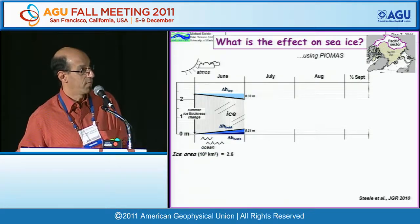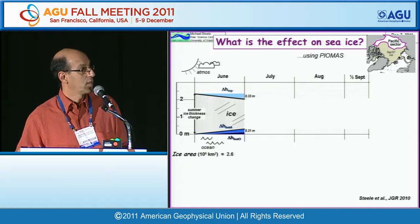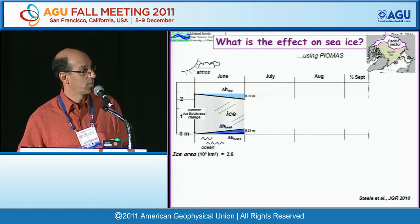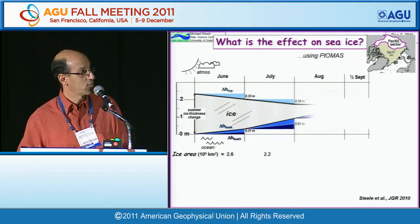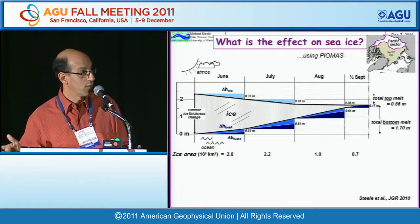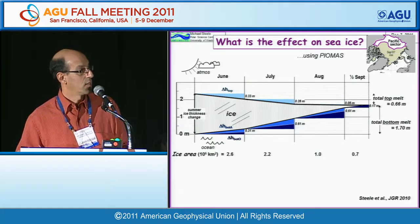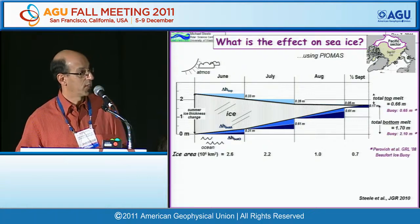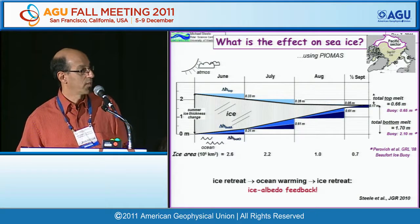The next question is: what is the effect of this warm water on sea ice? Using the model and averaging over the Pacific sector, net ice melt starts in June with about 30 centimeters of melt on top and similar on the bottom of the floe surfaces. As summer progresses and the sun sets, top melting goes to zero and bottom melting becomes more important, as the ocean has absorbed heat from the sun and is now transferring it to the ice. This is the classic ice-albedo feedback: ice retreat allows the ocean to warm, which makes the ice retreat further.